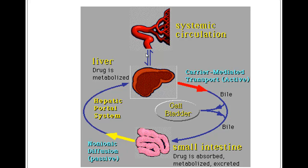This diagram illustrates the process. When drugs are taken in through the small intestine, they are passively absorbed and travel through the hepatic portal system to the liver, where the drug may or may not be metabolized before entering systemic circulation. If carrier-mediated active transport moves them into the bile, they may be stored in the gallbladder for a time, then excreted back into the small intestine, where they can undergo the whole process again or be eliminated in the feces.